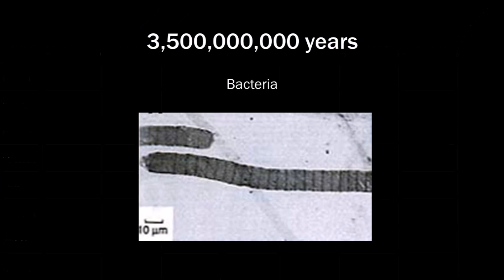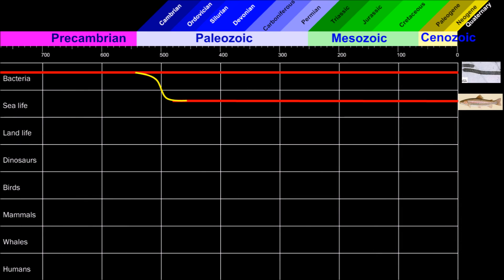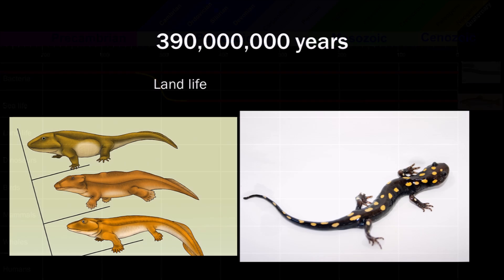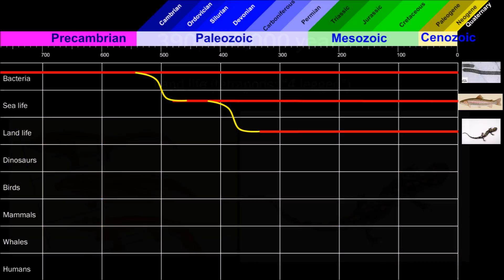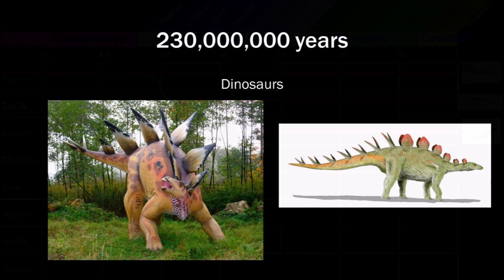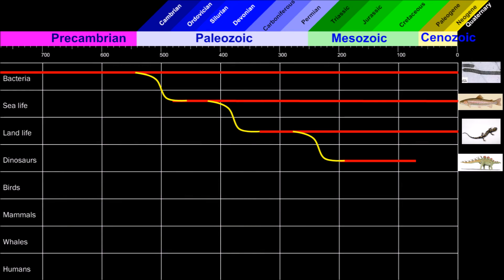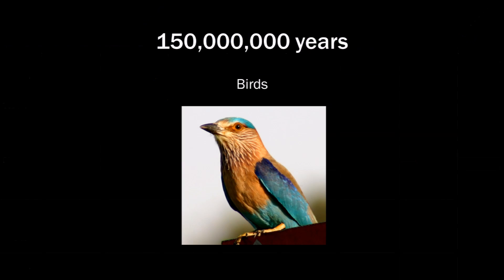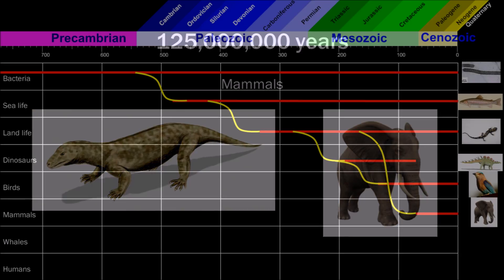It's said that the first bacteria evolved into existence about 3.5 billion years ago. Then the first animals were all sea life that evolved 540 million years ago. This evolved into land life 390 million years ago in the form of tetrapods, which means four-legged. 230 million years ago they evolved into dinosaurs, which later went extinct about 65 million years ago. Then 150 million years ago the birds arose from the dinosaurs, and 125 million years ago the first mammals showed up.